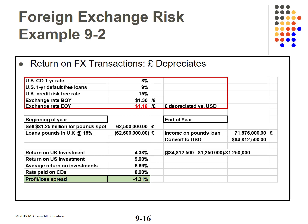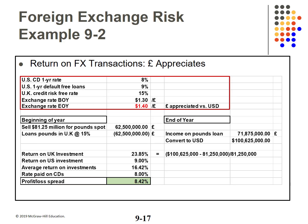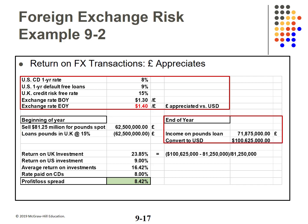But suppose the exchange rate changes from $1.30 to $1.18 by year end. The pound depreciates versus the dollar — it takes fewer US dollars to buy one pound sterling. The income on the UK loan is the same, but converting back to US dollars is now only $84,812,500, resulting in a net loss of 1.31%. Going the other way, if the pound appreciates, converting back to the dollar yields $100,625,000, and the net profit is 8.42%.